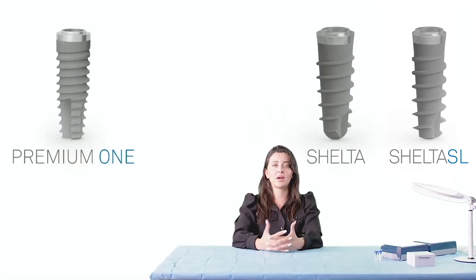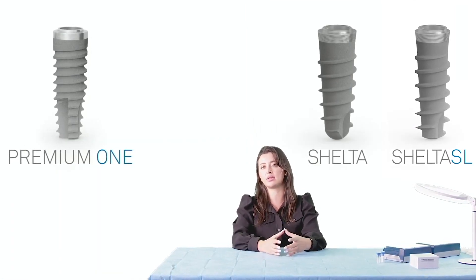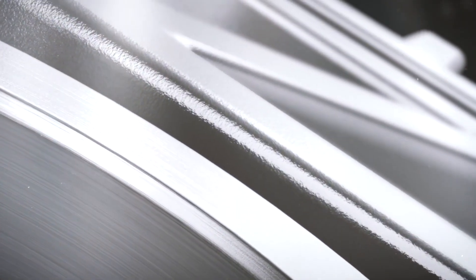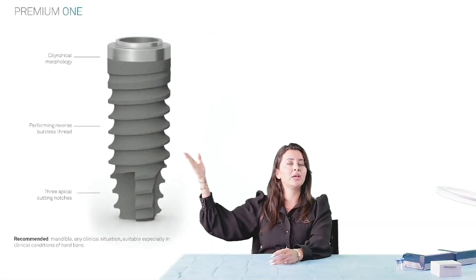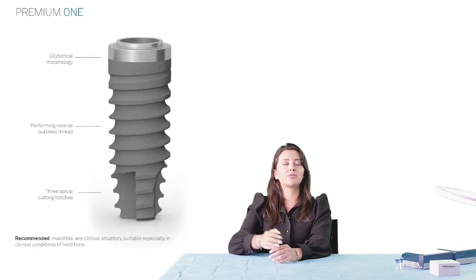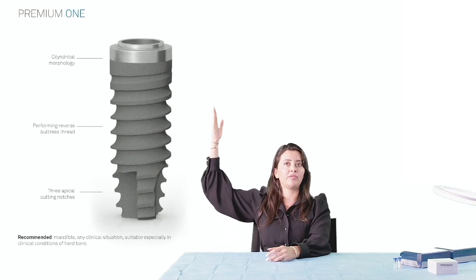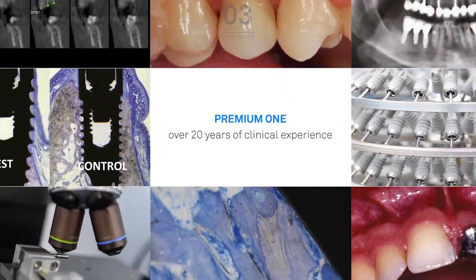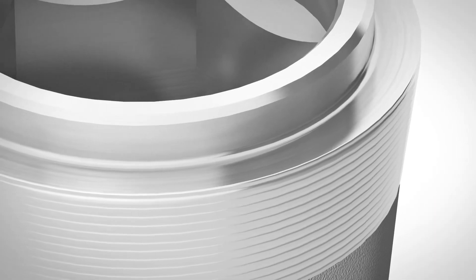The two implant designs we are offering are Premium One and Shelter. The main difference between both is that Premium One is a cylindrical implant while Shelter is a tapered implant. Premium One starts off as a straight-walled implant and then tapers off at the last three apical notches. That's why you can also call it a hybrid implant — a hybrid of a straight and a tapered implant. Because of its hybrid feature, Premium One can be placed in all types of bone, especially in dense bone.